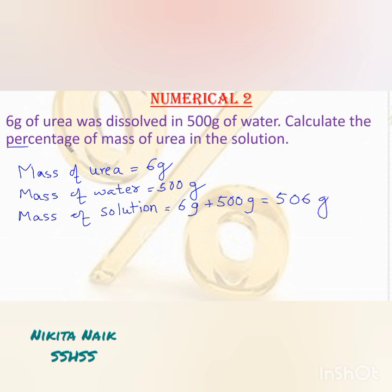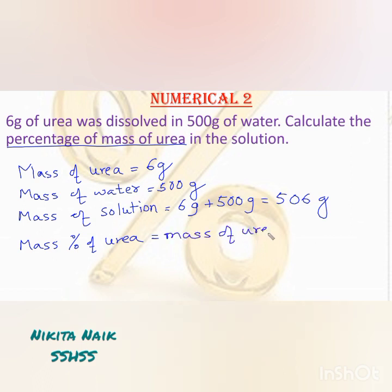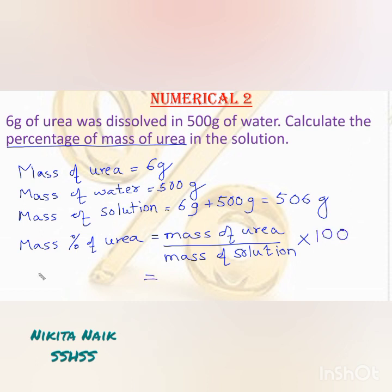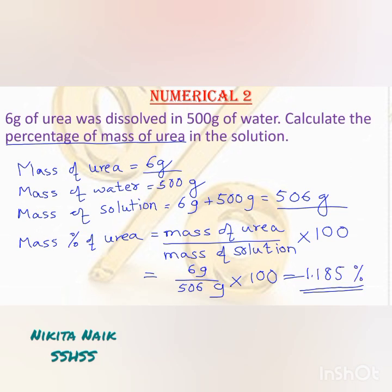So now we need to find out the percentage of mass of urea. Mass percentage of urea is equal to mass of urea upon mass of solution into 100. So this will be equal to 6 gram upon 506 gram into 100, which is equal to 1.185 percent. That is, the percentage of mass of urea in the solution is 1.185.